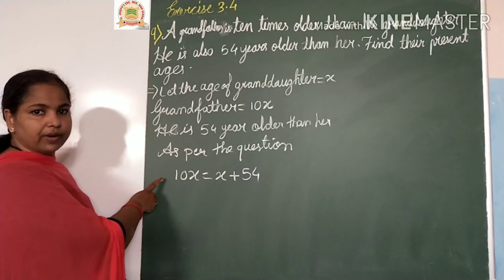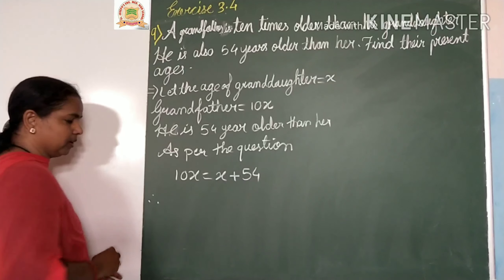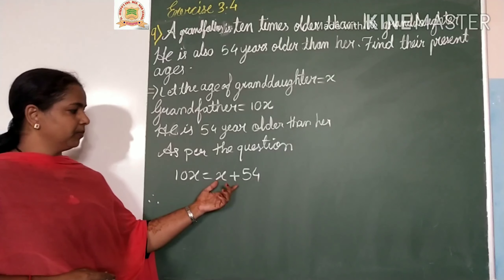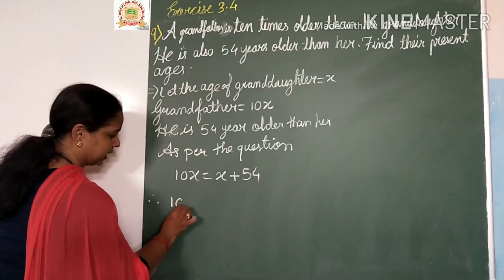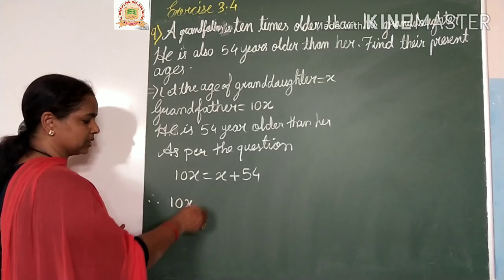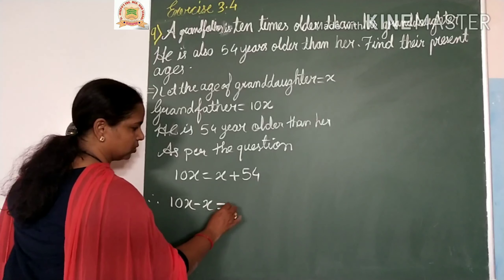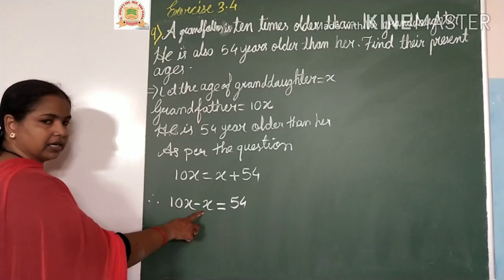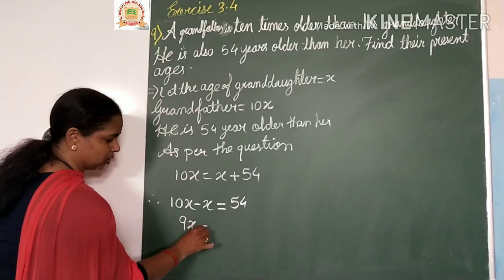Now we simplify this linear equation. We take variables to one side and constants to the other side. Therefore, 10x minus x equals 54, which gives 9x equals 54.